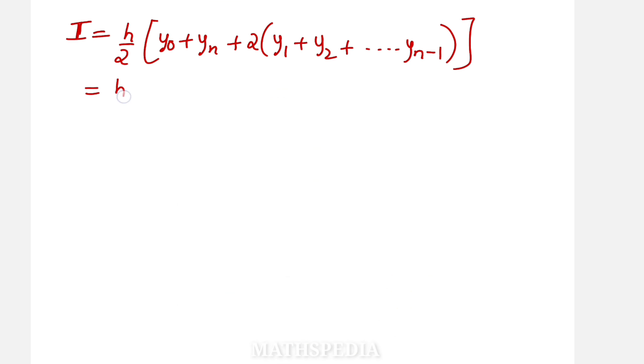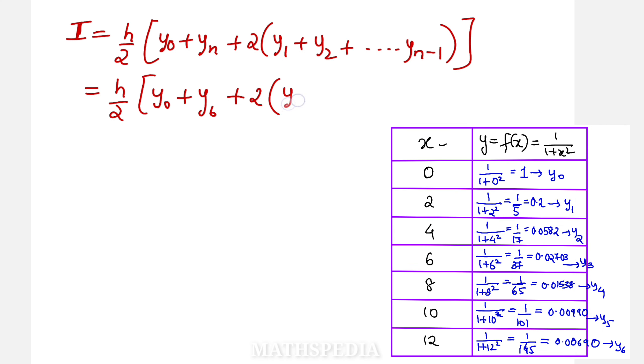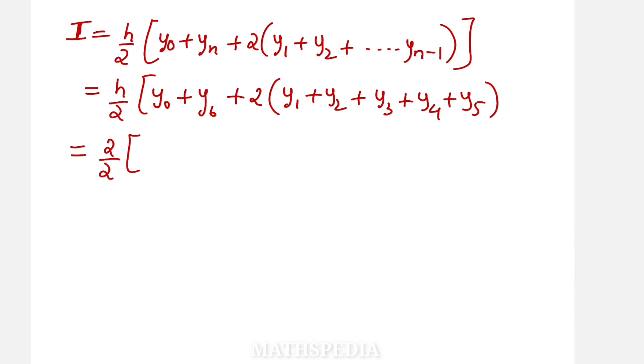But here in this case, h by 2, first term is y0, last term is y6, plus 2 times of in between whatever terms are there: y1, y2, y3, y4, y5. But y6 I cannot write because it is already considered over here. Now we have to substitute the values. h we call it as 2, so 2 by 2, y values we'll substitute. So observe here that we have got the value as 1.62916. This is the value we are getting for numerical integration.